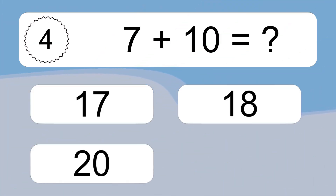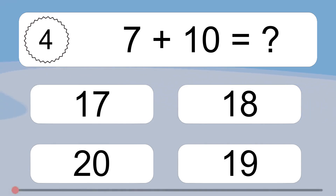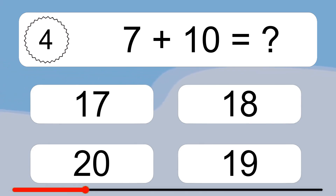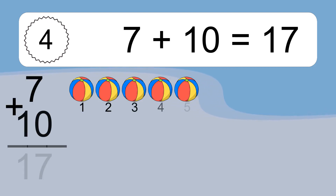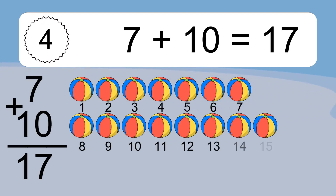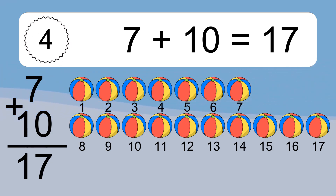7 plus 10 equals what? Let's count it. 1, 2, 3, 4, 5, 6, 7, 8, 9, 10, 11, 12, 13, 14, 15, 16, 17.